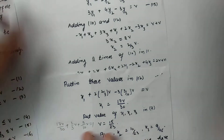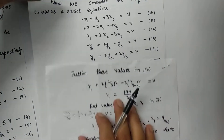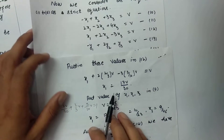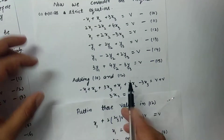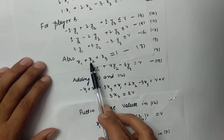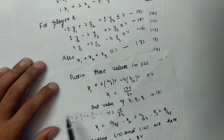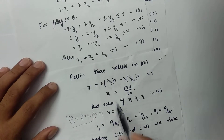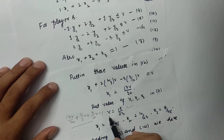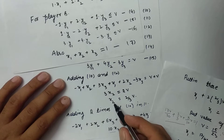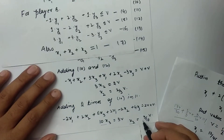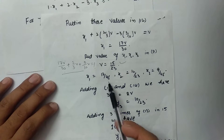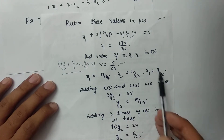To find the value of x1, I put all these values into equation 12, and I get x1 equals 17v/30. Now I put all these into equation 7 — that is, x1 plus x2 plus x3 equals 1. So 17v/30 plus 2v/3 plus 3v/10 equals 1. After simplifying, I get v equals 15/23. Substituting back, x1 equals 17/46, x2 equals 10/23, and x3 equals 9/46.